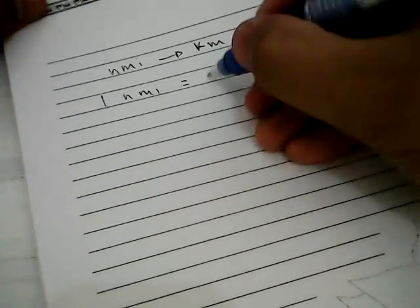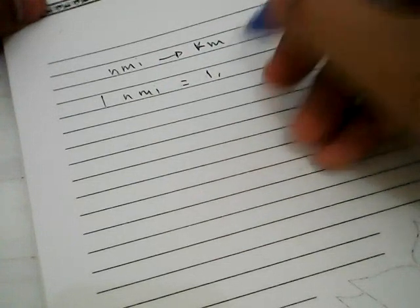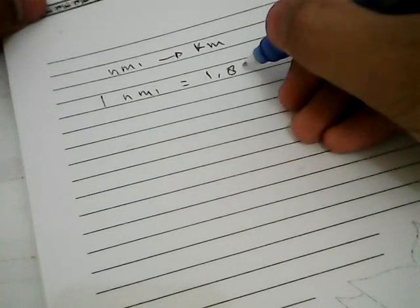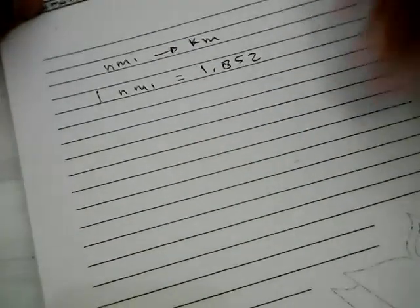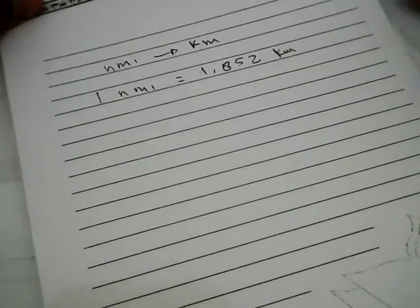Before we are dealing with an equation problem, we need to know that one nautical mile is equal to 1.852 kilometers.